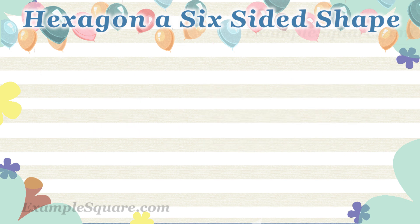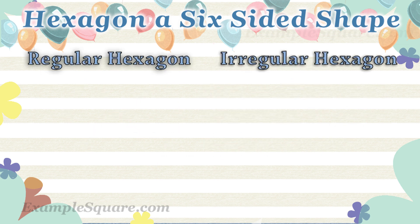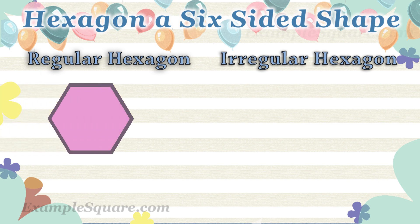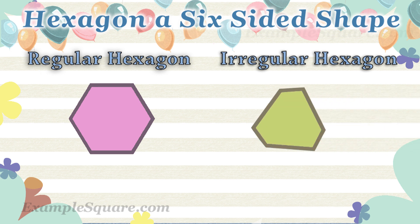What is a regular hexagon and what isn't a regular hexagon? If all the six sides of a hexagon are equal and all six angles are equal, then it is a regular hexagon. Otherwise, it is an irregular hexagon.